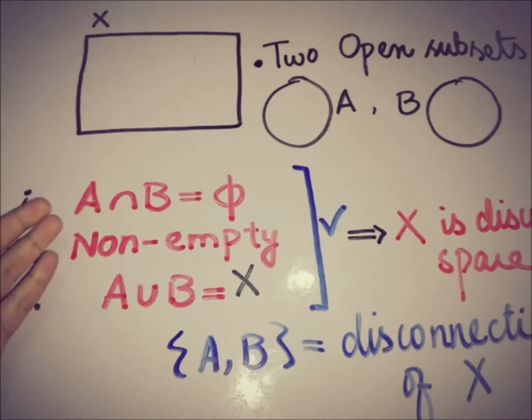So if we have a pair of open subsets of X whose intersection is empty, that are non-empty, and whose union is equal to X, then the space is disconnected. And if there is no such pair, then the space is said to be a connected space.